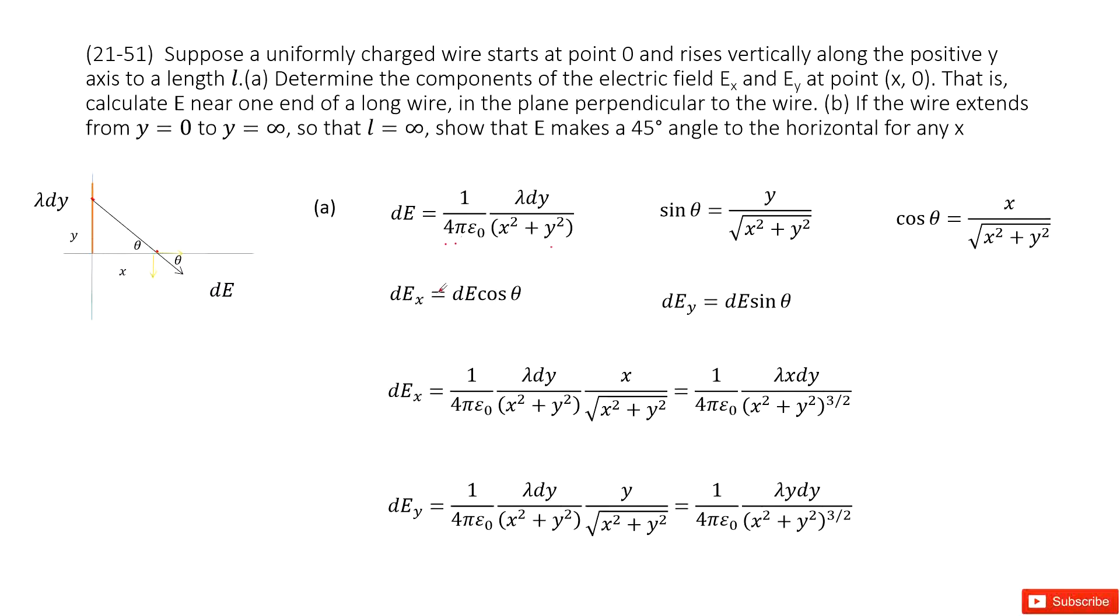We can project this electric field for this small fraction in x component times cosine theta and in y component times sine theta, because this is angle theta. And you can also write sine theta as y divided by square root of x squared plus y squared. And also the cosine theta as x divided by square root of x squared plus y squared.